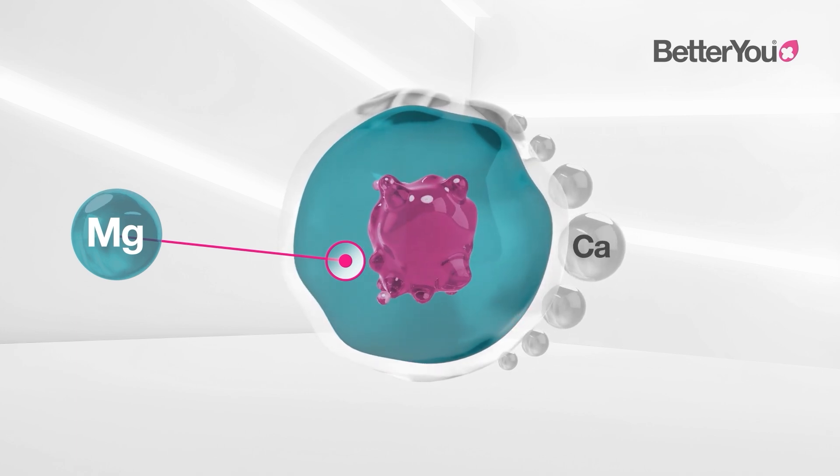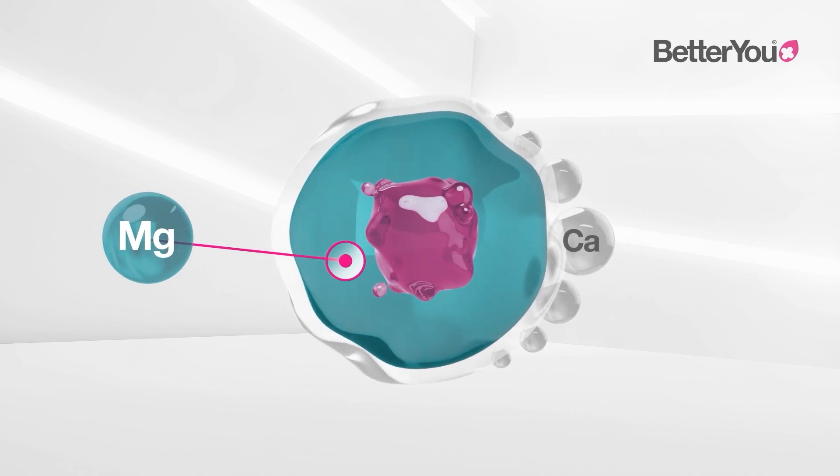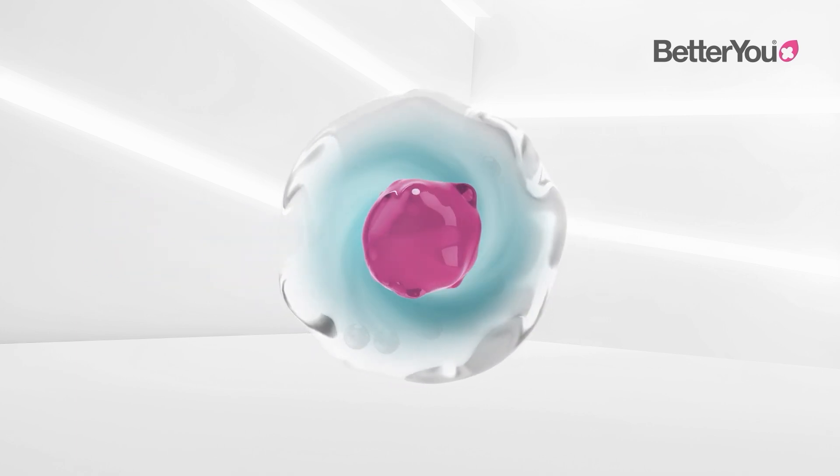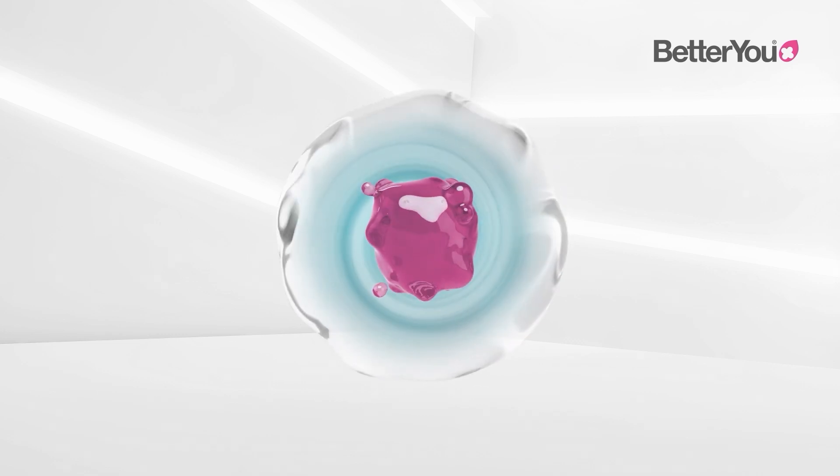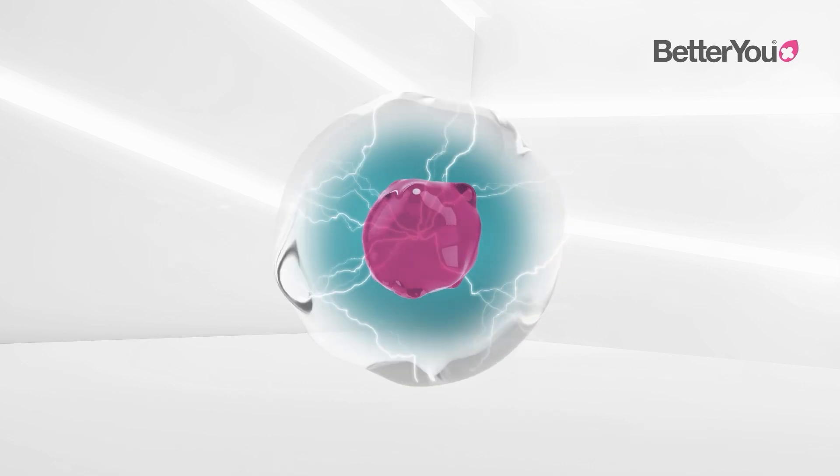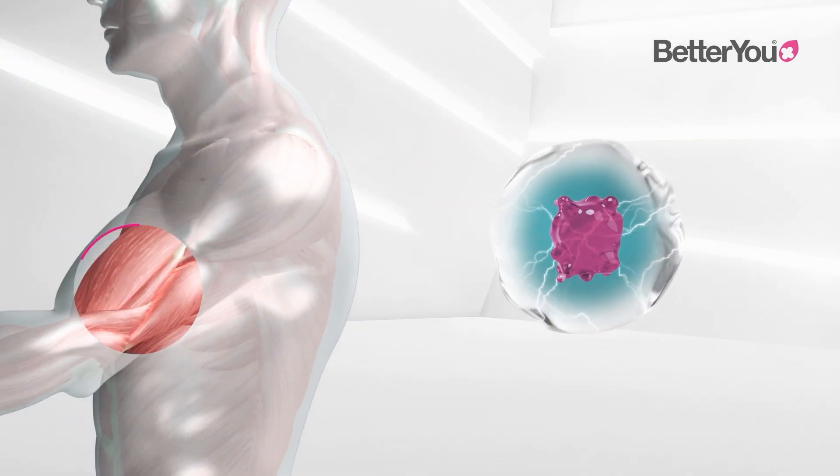For the cell to function, gateways in the cell will open and calcium temporarily floods the cell, and the magnesium and calcium react. If it's a nerve cell, it will fire. If it's a muscle cell, the muscle will contract.